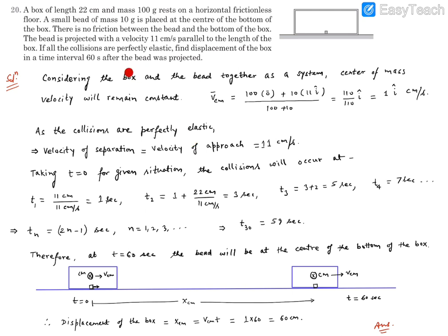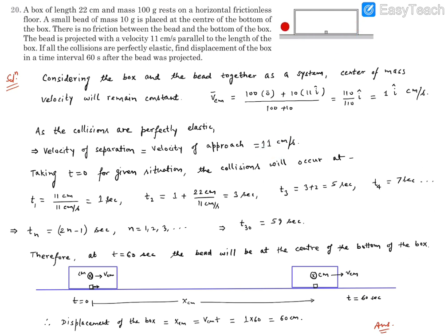Considering t = 0 as the initial time, the bead is moving at 11 centimeters per second and the box is at rest. The bead starts at the midpoint, so it needs to cover half the box length: 22/2 = 11 centimeters. With approach velocity 11 centimeters per second, the first collision takes place at t = 1 second. After that, the bead must travel the full 22 centimeter length relative to the box, which at a relative velocity of 11 centimeters per second takes 2 seconds.